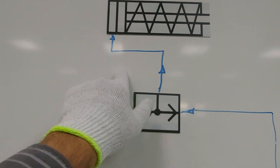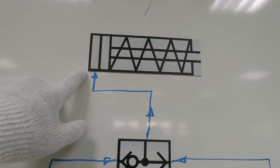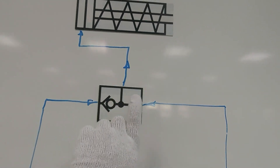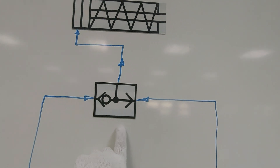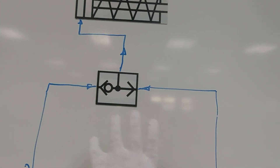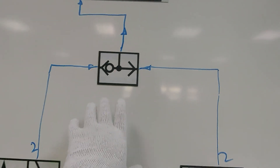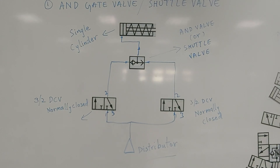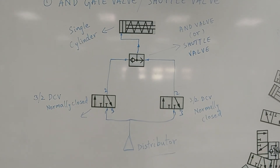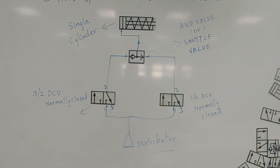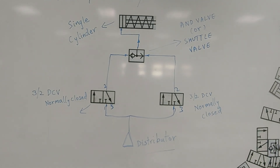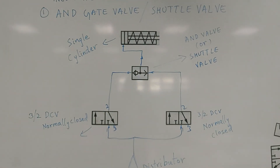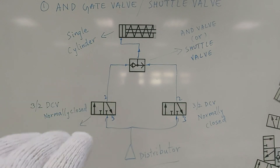The output of both valves will go to the AND gate valve, or shuttle valve, and from the shuttle valve it will go to the single acting cylinder. Now we will see what this gate valve or shuttle valve does. We will connect this in our pneumatic circuit board and check what it does. The circuit diagram with names looks like this: distributor, 3 by 2 DCV normally closed, shuttle valve — the symbol is this — and single acting cylinder.